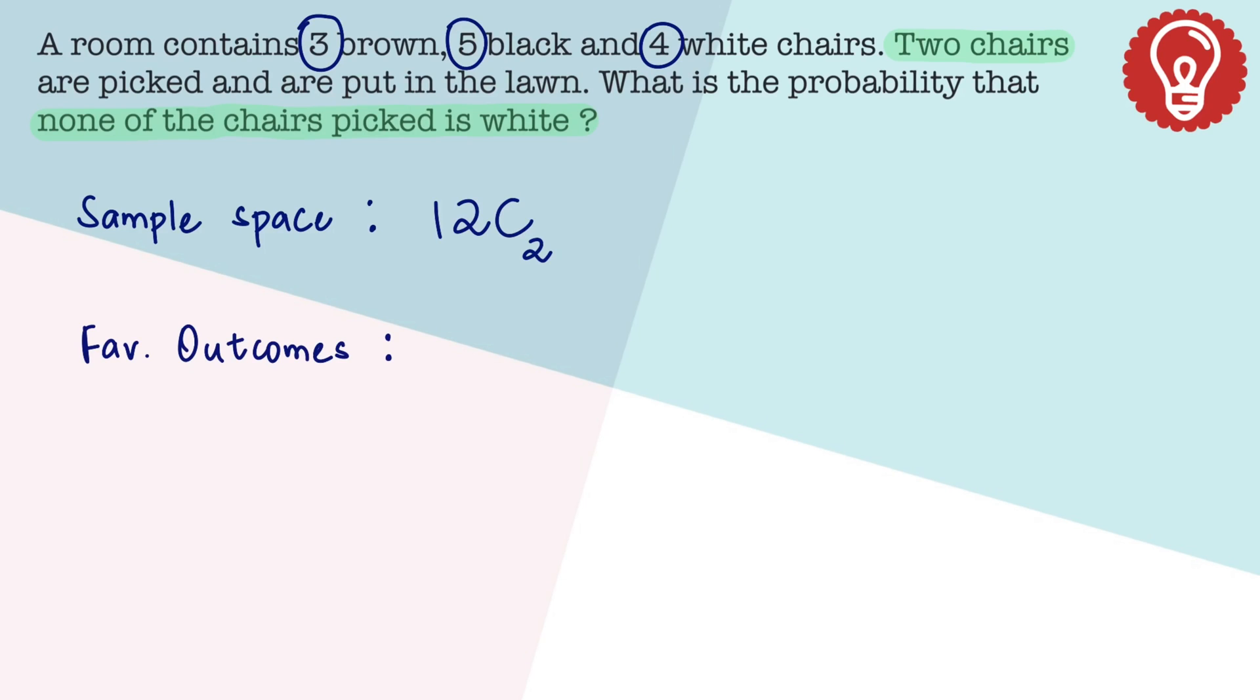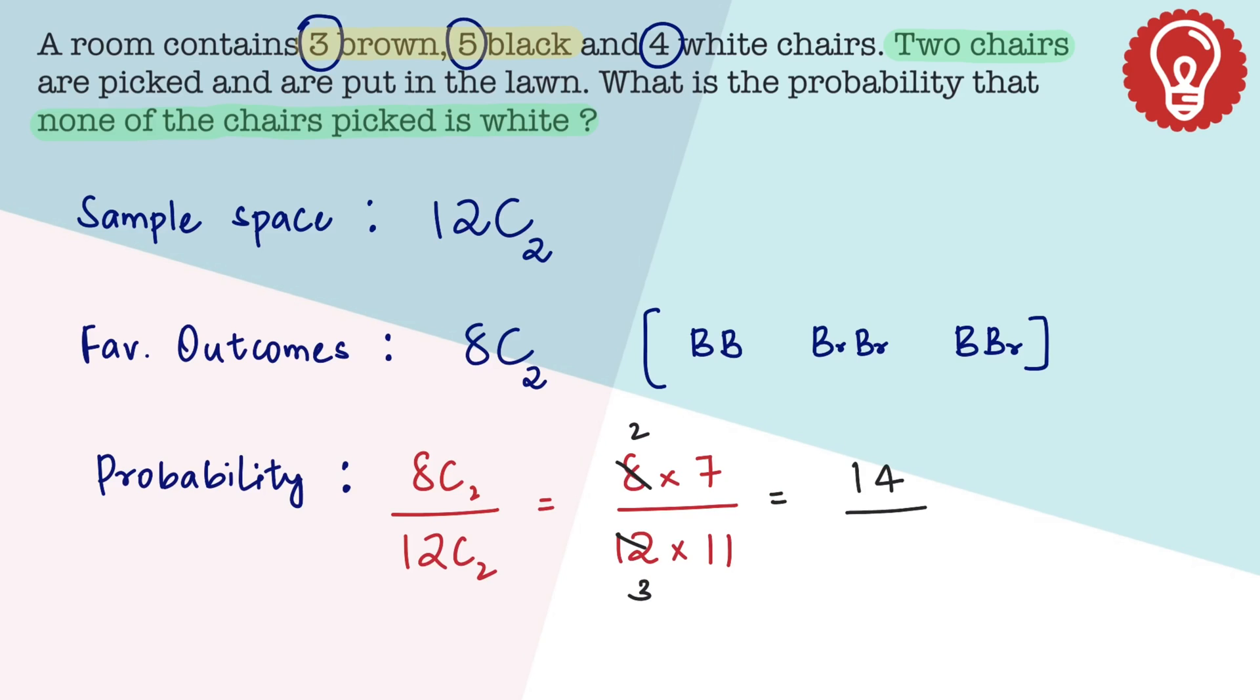So we don't want a white chair, but the chair can be brown or it can be black. And there are three brown and five black, so there are eight chairs altogether. Out of these eight, I need to select two. It means that both the chairs can be black or both the chairs are brown or one is black and the other one is brown. Now if you look at the probability, 8C2 by 12C2, on expanding and striking this with 4, we get 14 by 33.